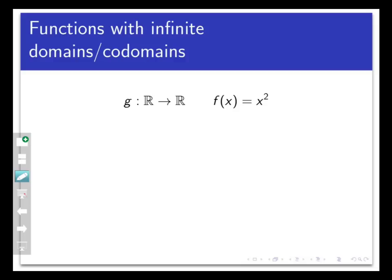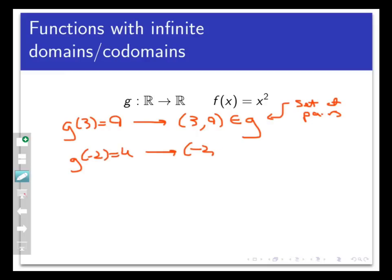Let's at least come up with some examples of ordered pairs that are in this function. Well, for example, if I use the input x equals 3 from the domain, I know that g of 3 equals 9, and so that means the ordered pair 3 comma 9 is in the set g. Again, g is not really thought of as a formula here. It's a set of ordered pairs, and 3, 9 is one such ordered pair. Another ordered pair that would be in g is negative 2 comma 4 because g of negative 2 equals 4. Another would be 0, 0, and another would be 1 half comma 1 fourth. There are infinitely many of these ordered pairs, so we can't list them all.